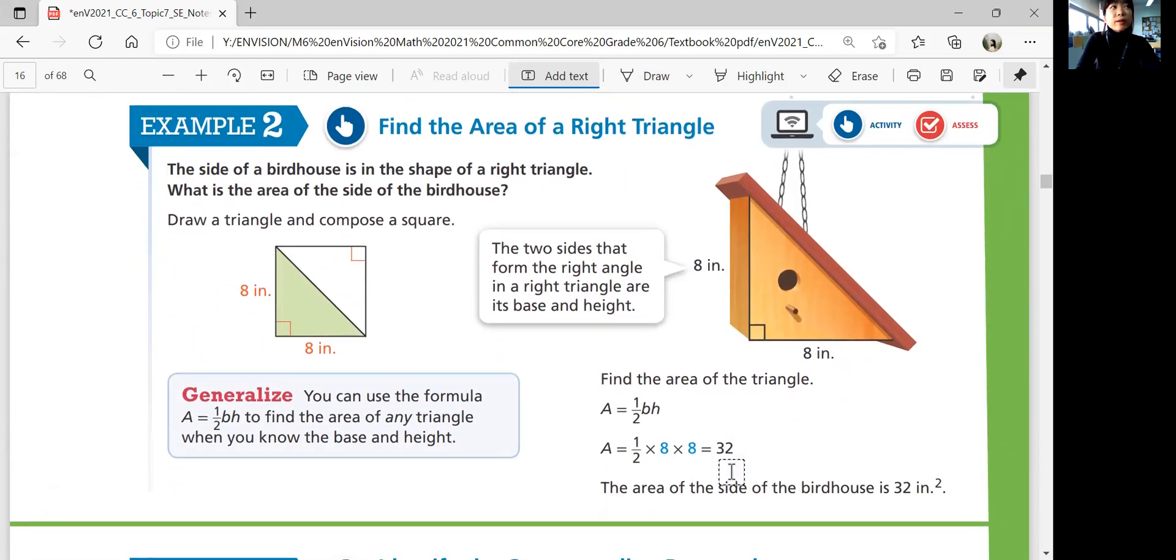Example 2 on the next page. Finding the area of a right triangle. You have a right triangle here where you have one angle that's perpendicular, 90 degrees. The side of a birdhouse is in the shape of a right triangle. What is the area of the side of the birdhouse? So we want to figure out the area for this one. If you have a right triangle like this, right triangles don't always have equal length of base and height, but in this case it does. So we have base, which is equal to 8 inches, and height, which is equal to 8 inches. So just plug that in. 8 times 8 is 64. Divide by 2 is 32. So the area of the side of the birdhouse is 32 square inches.